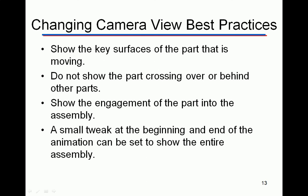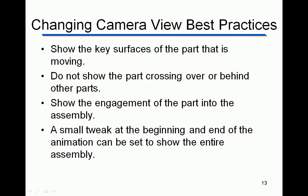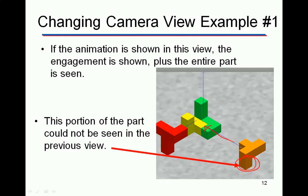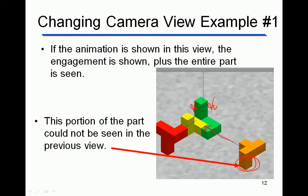Here are some best practices: First, you want to show the key surfaces of the part that is moving — on that orange part, make sure those key surfaces are visible. Second, do not show a part crossing over or behind other parts, because then you lose it and can't see it well enough. Third, show the engagement of the part into the assembly — like the blue part engaging into that area, where changing the camera view helps you see how it fits around the green part.